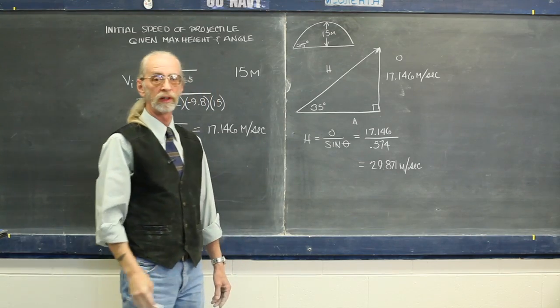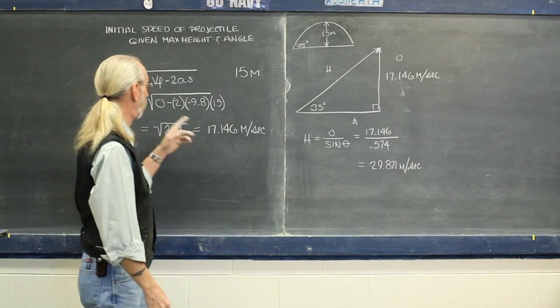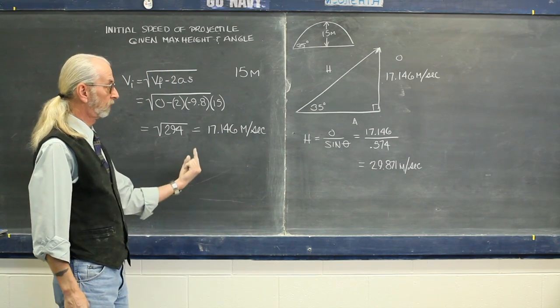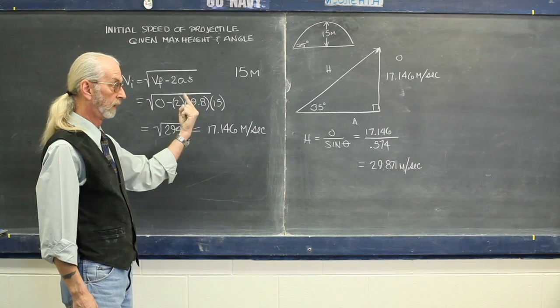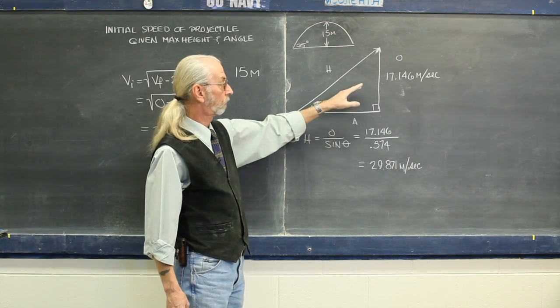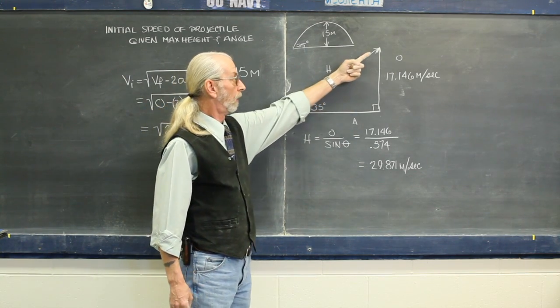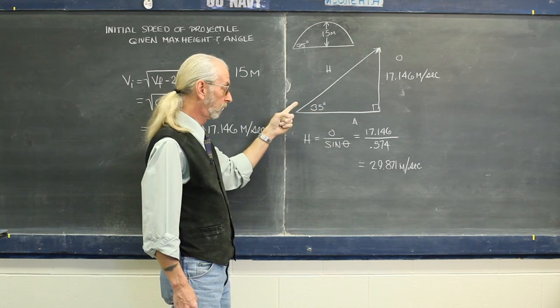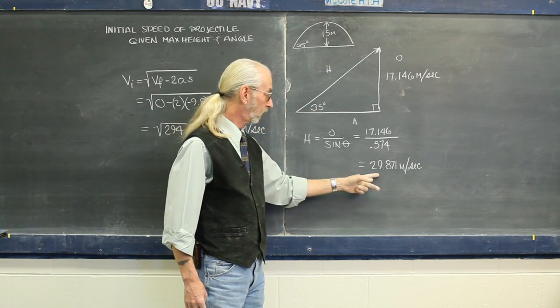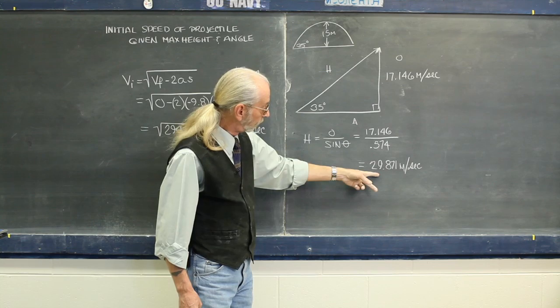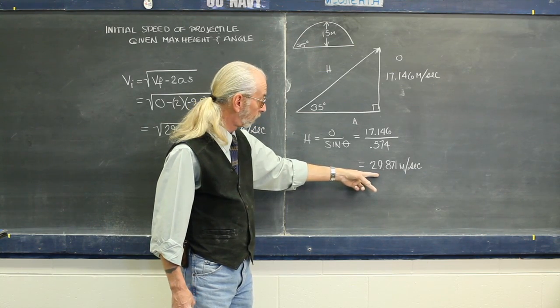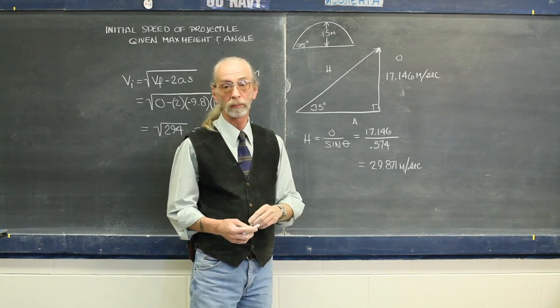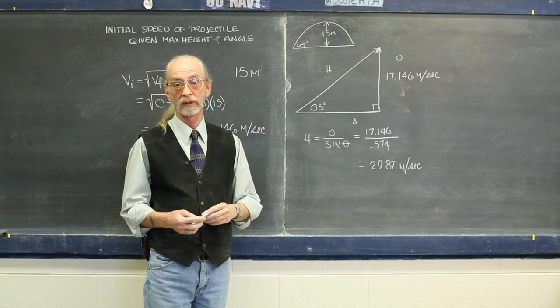and we knew that its initial angle was 35 degrees, we can figure out the initial velocity going straight up and from that we can use trig to derive the length of this hypotenuse and we can see that the actual trajectory would have been 29.871 meters per second at an angle of 35 degrees.